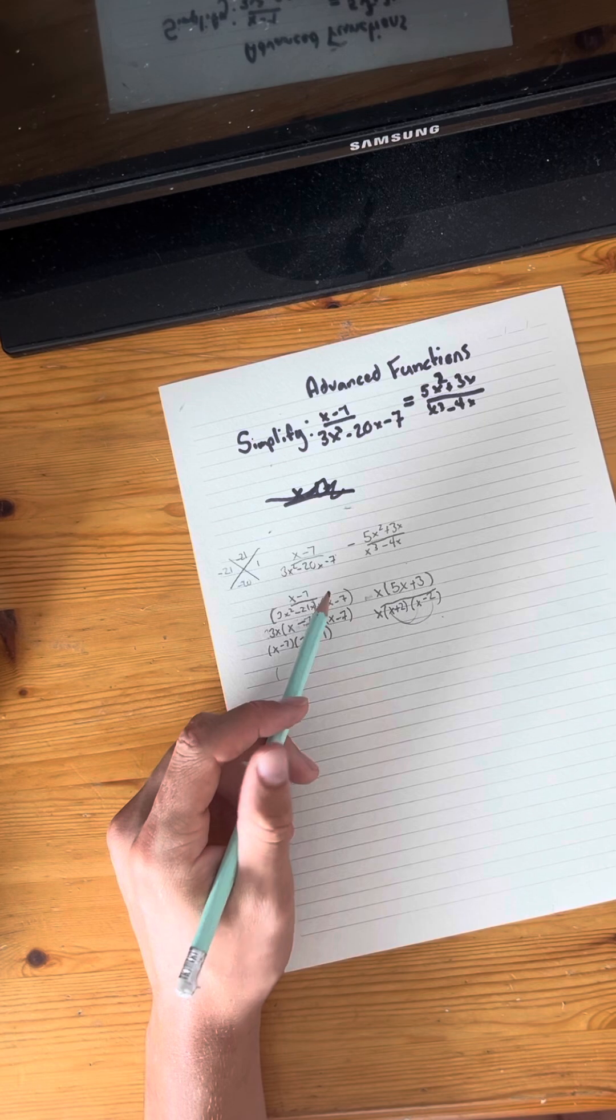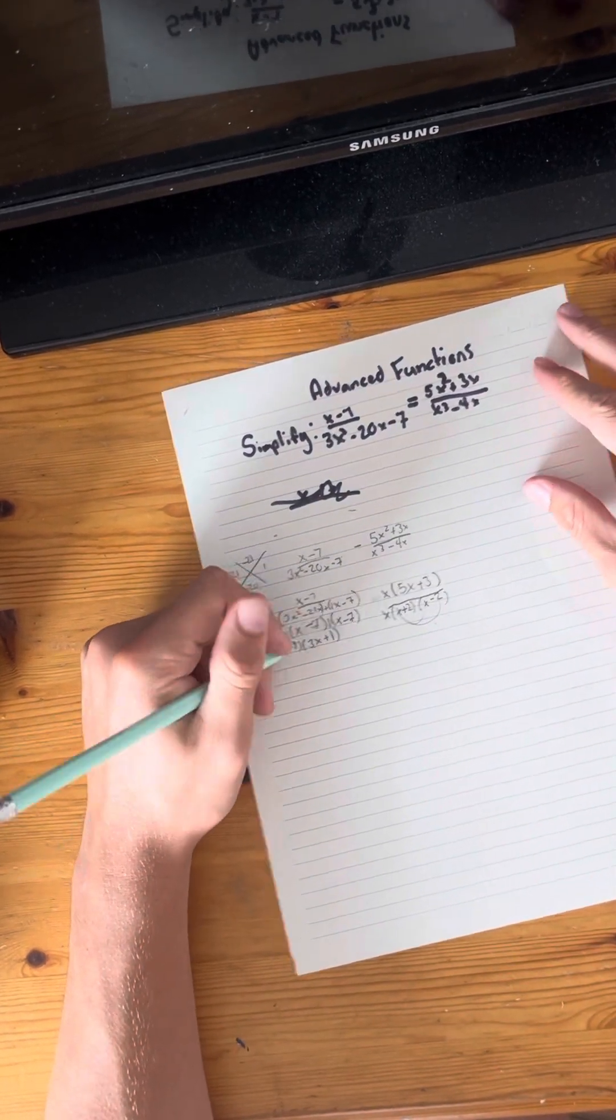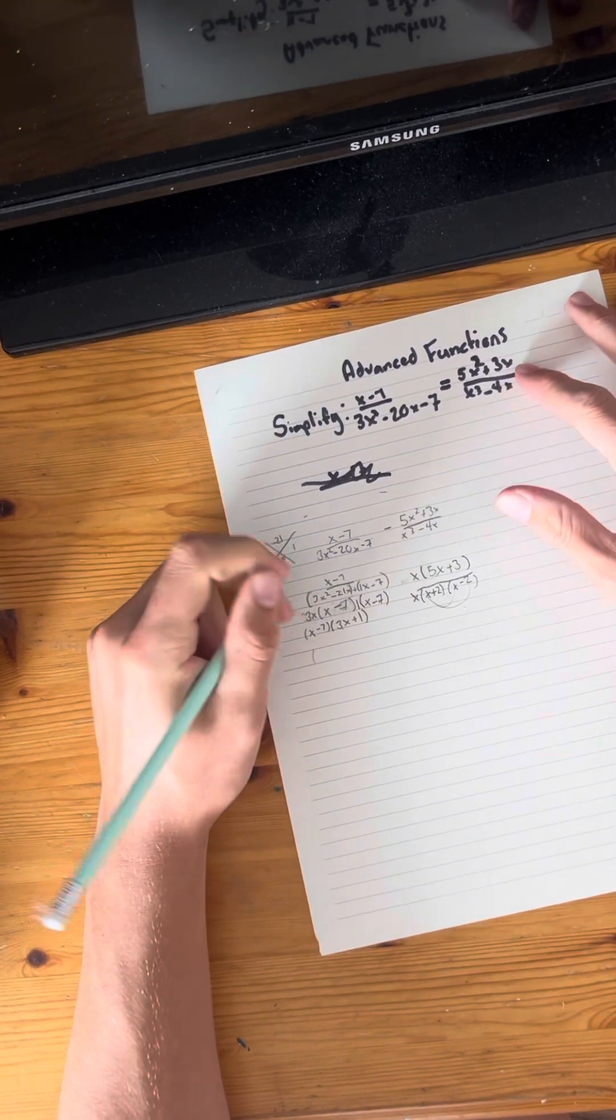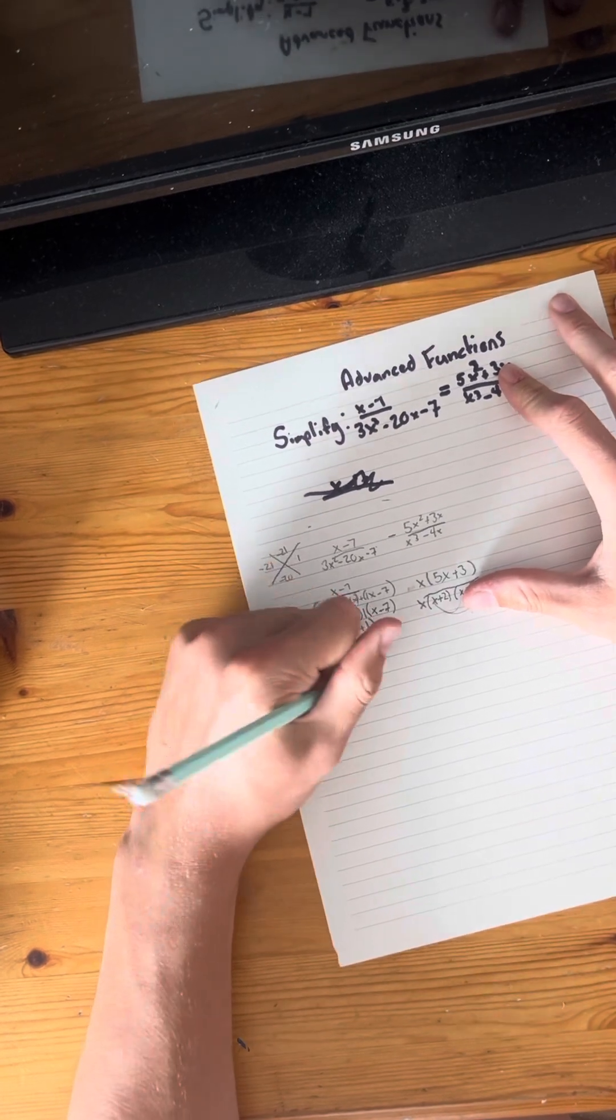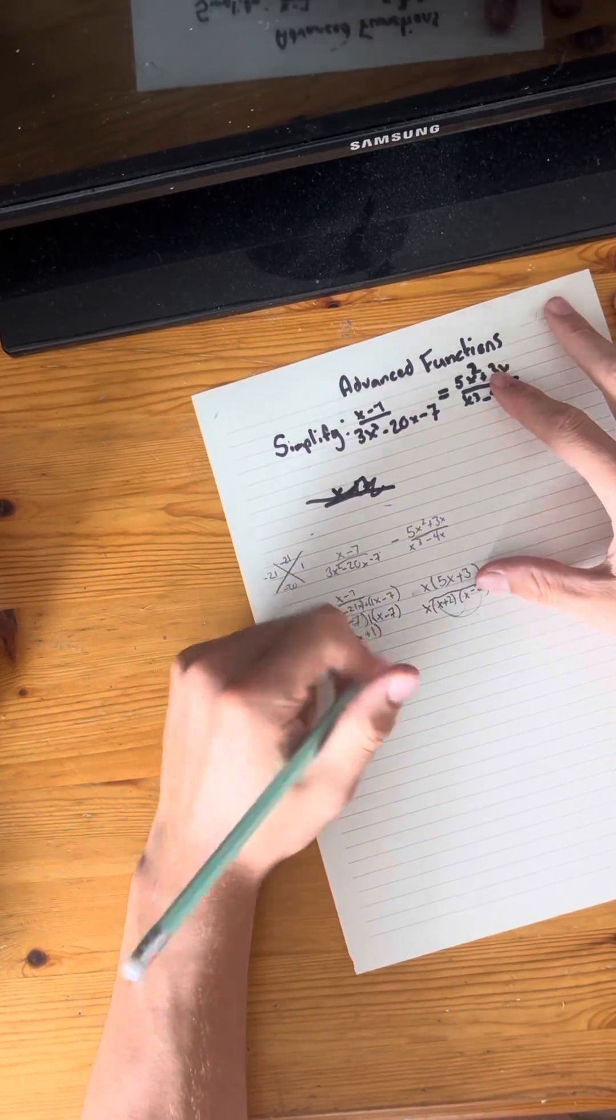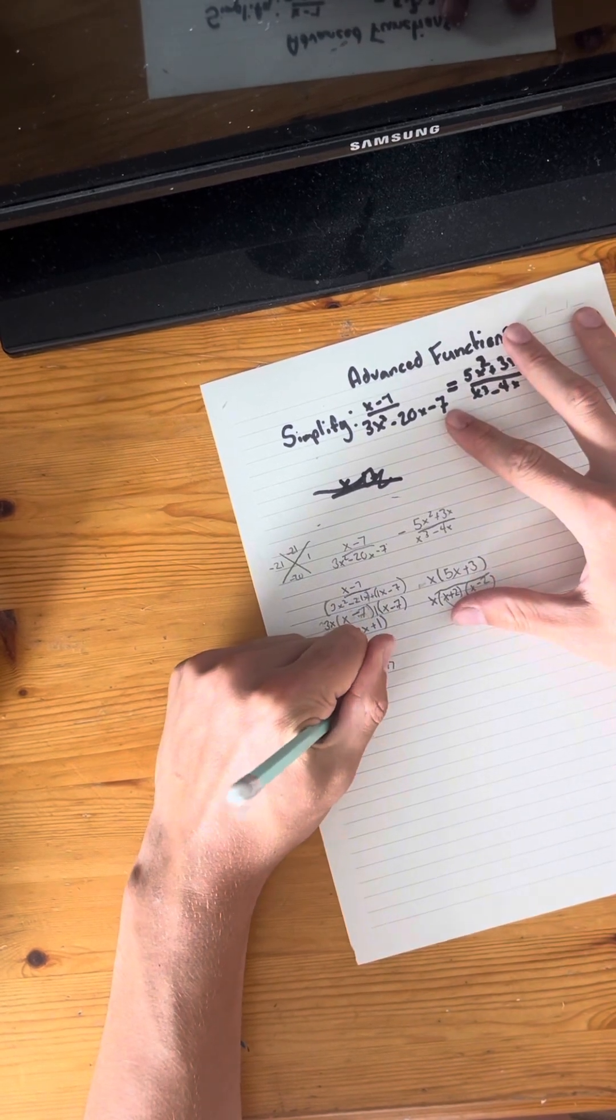So these are all just factored versions of this. And now we can get to figuring out our restrictions now that this is simplified. Now what we can do is find our restrictions. So first one, x take away seven, say this is zero obviously, bring this over, this would be plus seven. Our first one would equal seven.